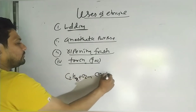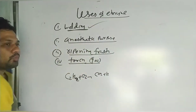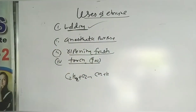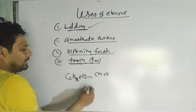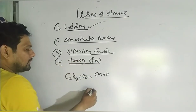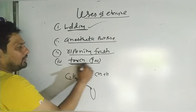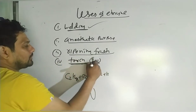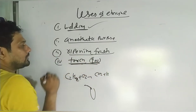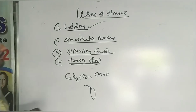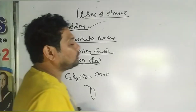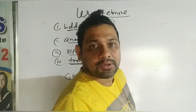Ethyne combustion produces CO2, water, and a flame — this flame is used in the welding torch. Ethyne is also used as an anesthetic — doctors use it.